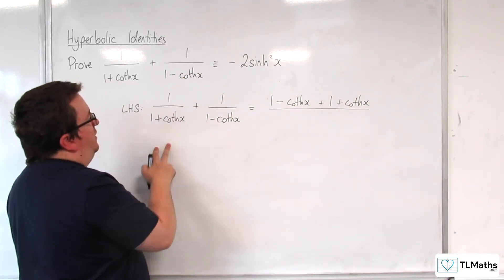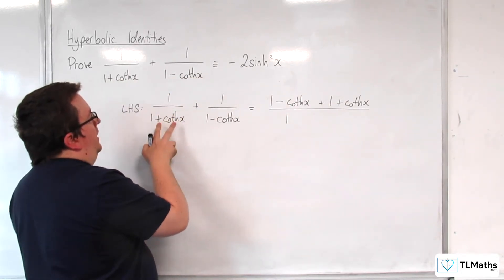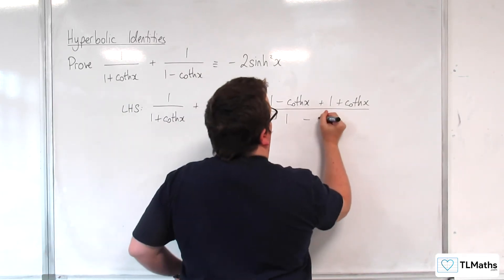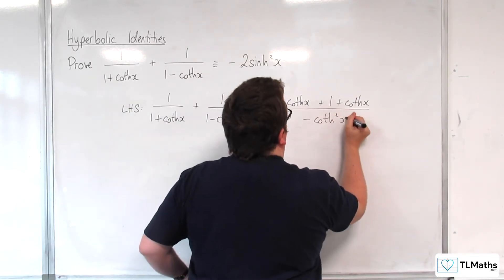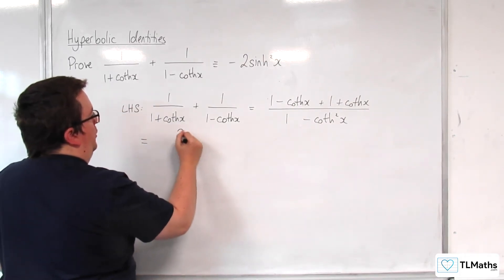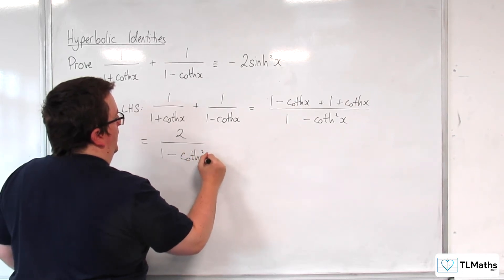And then multiplying the denominators together, 1 times 1, we're going to get plus coth x take away coth x, so take away coth squared x. So I am left with 2 over 1 take away coth squared x.